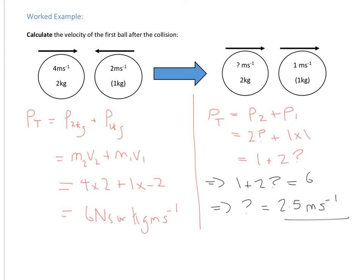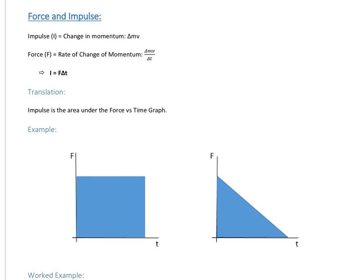The last thing to look at is how we can relate an impulse — the change in momentum of an object — to the force it experienced. As we said, impulse is the change in momentum of an object. Using Newton's second law, the force equals the rate of change of momentum — the change in momentum over the time over which it occurs. So an impulse is the product of the force and the time over which that force is applied, assuming the force is constant throughout.